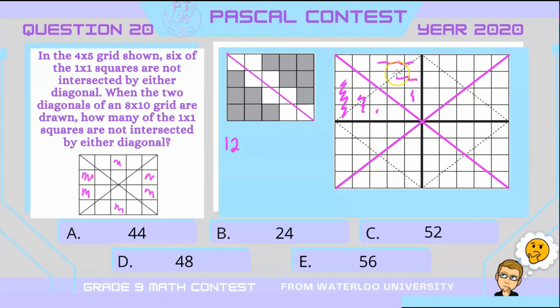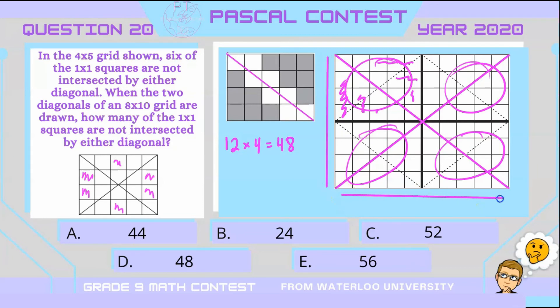And since these are all copies, we have a total of 1, 2, 3, 4 of these rectangles. So that would mean we have a total of 48 1x1 squares which do not intersect the diagonals of an 8x10 grid. So our answer is D.